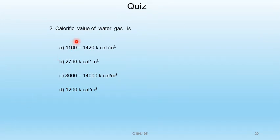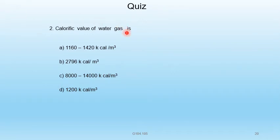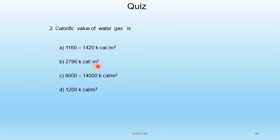Question 6 — Calorific value of water gas is: A) 1160 to 1420 kcal/m³, B) 2796 kcal/m³, C) 8000 to 14000 kcal/m³, D) 1200 kcal/m³. The calorific value of water gas is 2796 kilocalories per meter cube. B is the correct answer.